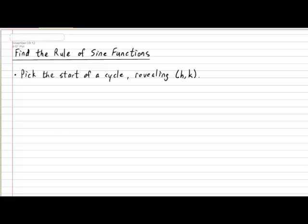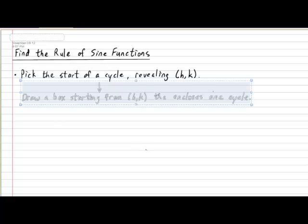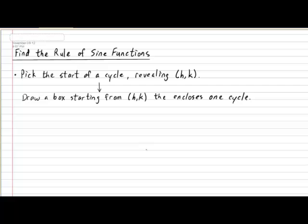The second step in the procedure is to draw a box starting from your chosen start of cycle that will enclose one whole cycle. Keep in mind that the cycle of a sine function contains a hump and a dip.